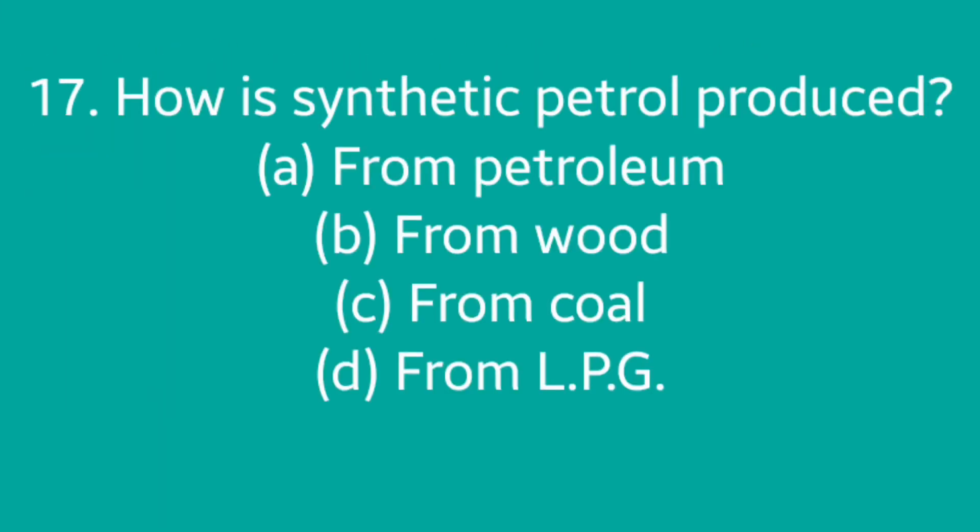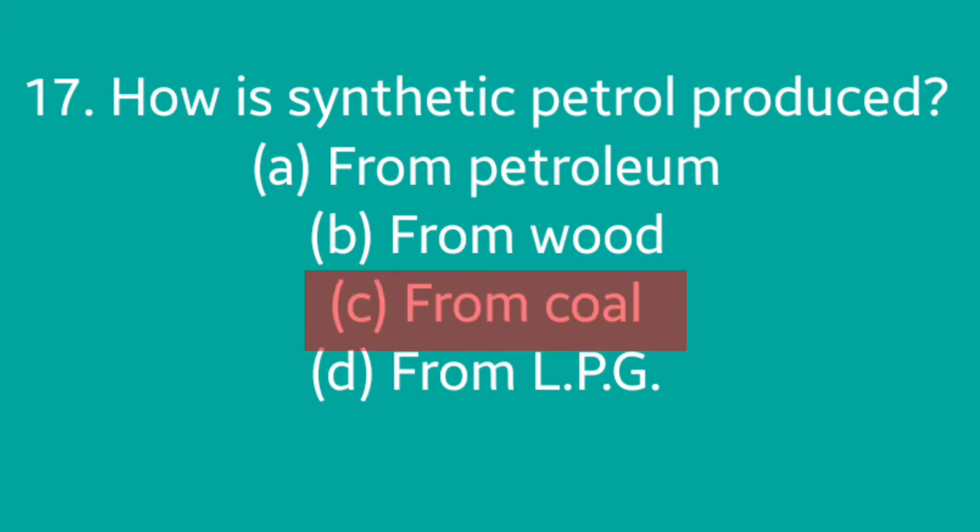Question number 17: How is synthetic petrol produced? Option A: from petroleum, Option B: from wood, Option C: from coal, Option D: from LPG. Answer is option C: from coal.